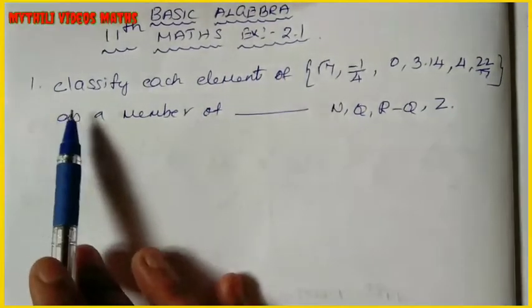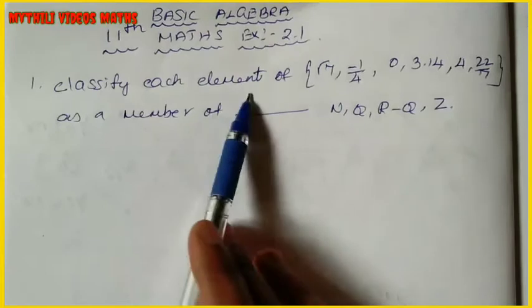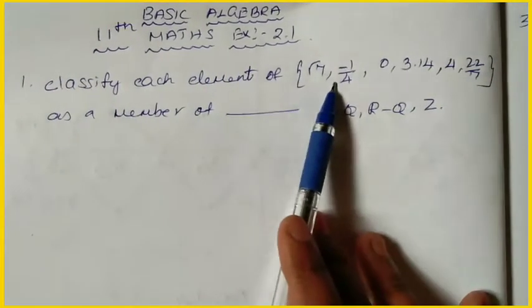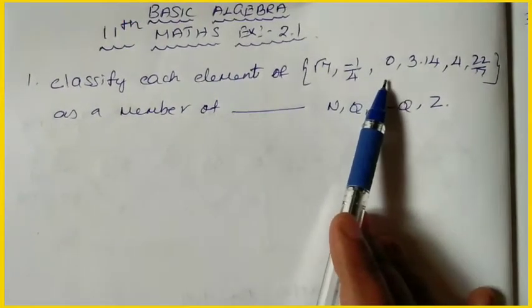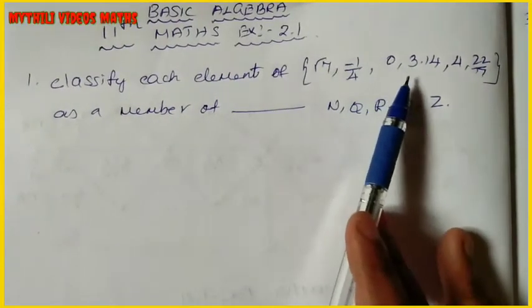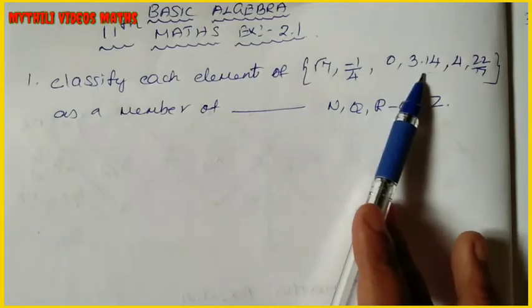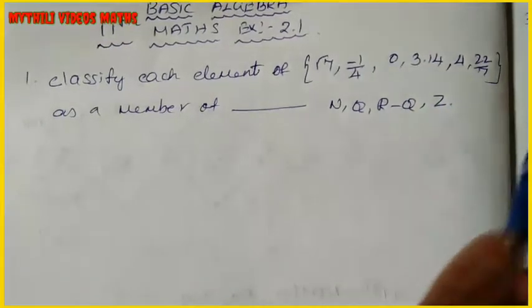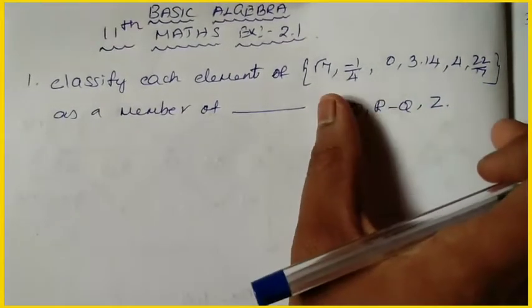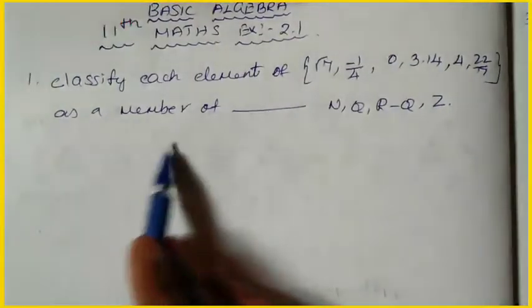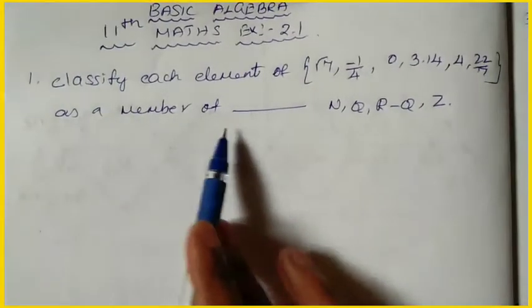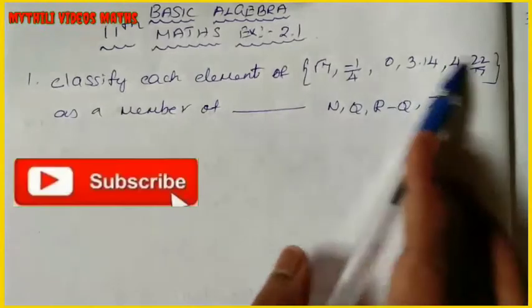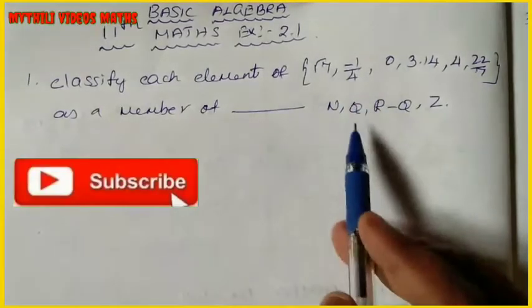the first sum is: classify each element of √7, -1/4, 0, 3.14, 4, 22/7. We will have to classify the terms as a member of which number set.